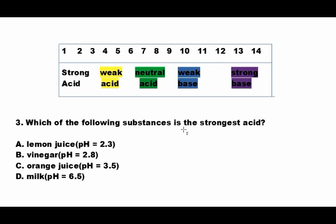Number three: which of the following substances is the strongest acid? In the chart above, 1 is the strongest acid, 7 is neutral, and 14 is the strongest base. The choices are: A) lemon juice at pH 2.3, B) vinegar at pH 2.8, C) orange juice at pH 3.5, or D) milk at pH 6.5.